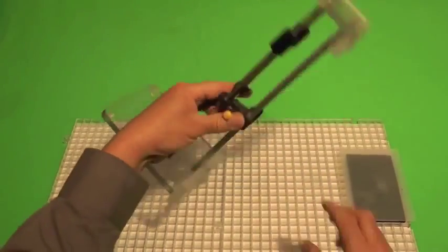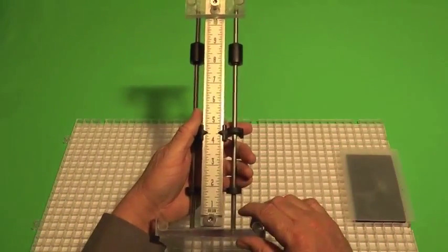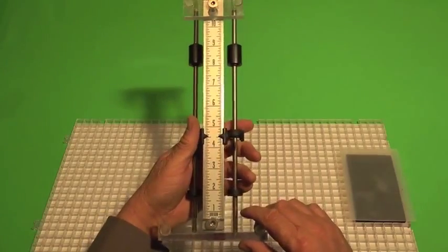This is the Creator's Bottle Cutter. It has a scale on the back so that you can cut rings in the same place on a bottle.